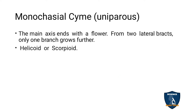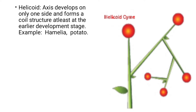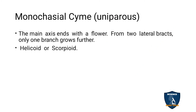The next one is monochasial cyme, uniparous type. The main axis ends with a flower and it has two lateral bracts. One branch grows further. So this is the main axis — the main axis ends with a flower but this is the lateral branch. The lateral branch grows and forms branches. Only one side it grows and forms the branches. Such type is called monochasial cyme. Again, monochasial cyme is divided into helicoid and scorpioid cyme.